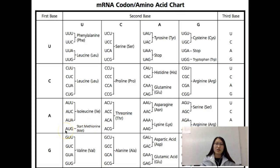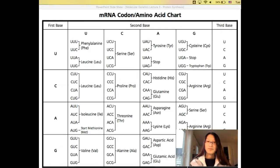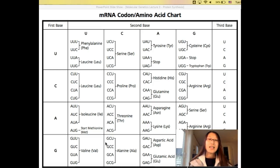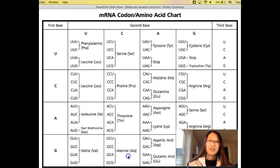Let's say you do CCC: look for C on the left, C for second base, C again on the right — CCC codes for proline. Let's try GCU: look for G on the left, then C across, then find GCU — that codes for alanine, that specific amino acid.